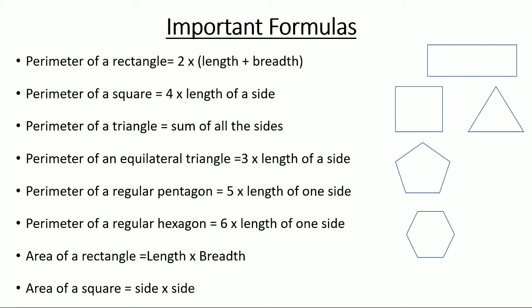The first one is perimeter of a rectangle. Perimeter basically means sum of all the sides of a given figure. So perimeter of a rectangle is 2 times length plus breadth.